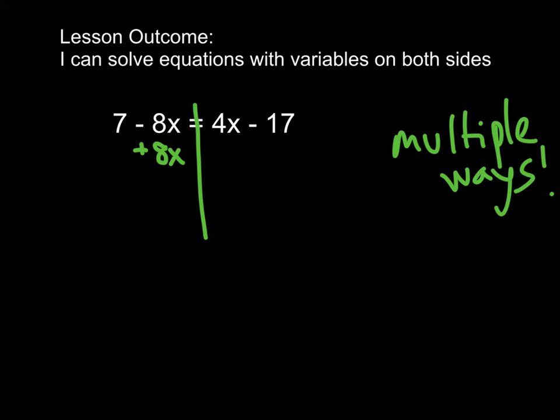So negative 8x and a positive 8x add up to 0, so these will cancel or become 0. Remembering that we do the same thing on both sides of an equation, we also need to add 8x on the other side. When we simplify, we get 7 equals, now we have 4x plus 8x, which is 12x, minus 17.